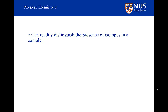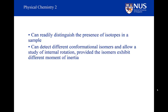We can readily distinguish between isotopes in a sample, and also detect different conformational isomers, since different conformational isomers can have different moments of inertia. We can also study internal rotational modes within molecules — for example, a methyl group rotating within a molecule will have a spectrum associated with it, giving information about the rotation rate and the energy barriers associated with that rotation.